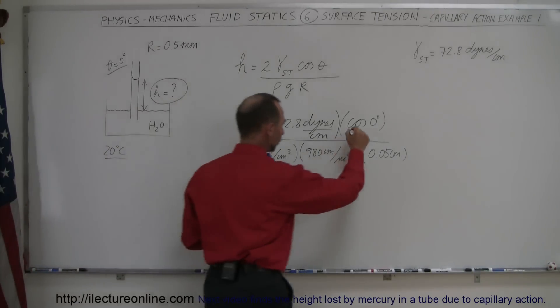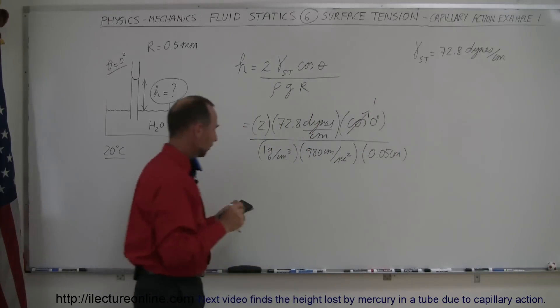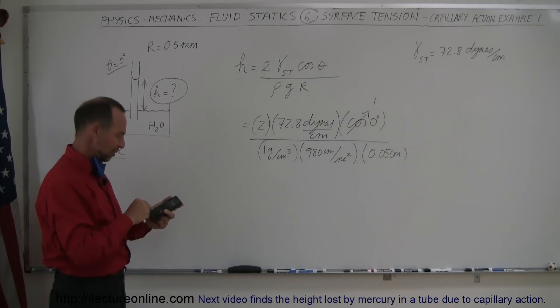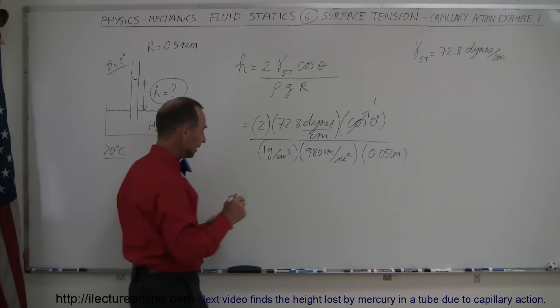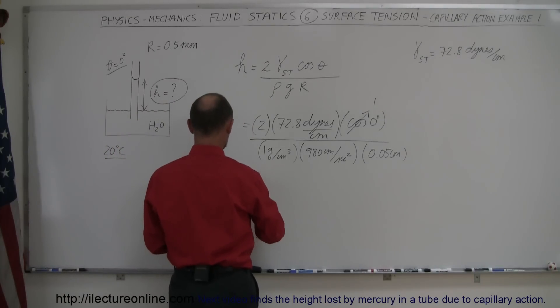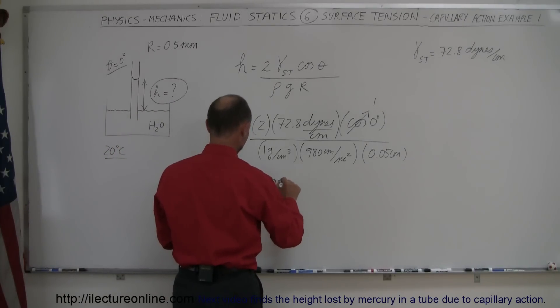All right. Of course, we know that this is equal to 1. So we have 2 times 72.8 divided by 980 and divided by 0.05. And let's see, wow, the height is 2.97 centimeters.